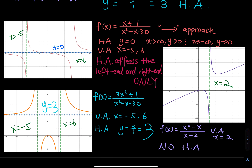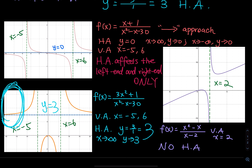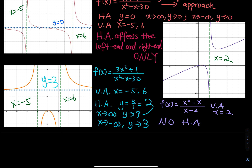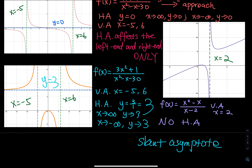As x approaches positive infinity on the right-hand side, y gets closer and closer to positive 3. As x approaches negative infinity on the left-hand side, y approaches positive 3 as well. For the last case, x equals 2 is the vertical asymptote and there is no horizontal asymptote. When the leading degree of the top is greater than the bottom, you don't get a horizontal asymptote — instead you get a slant asymptote, which we'll discuss in a separate video.